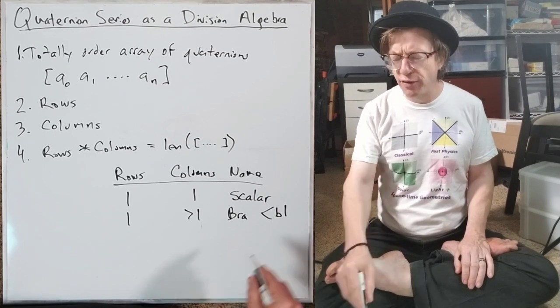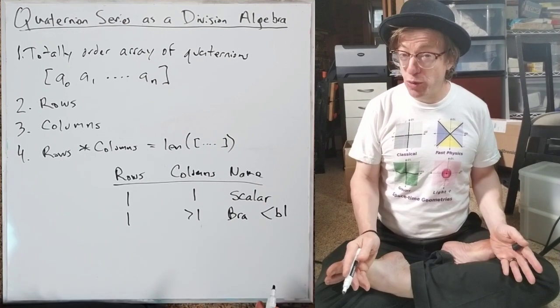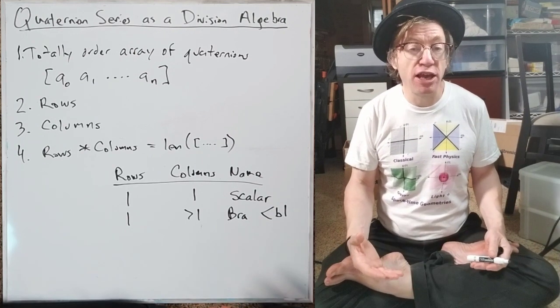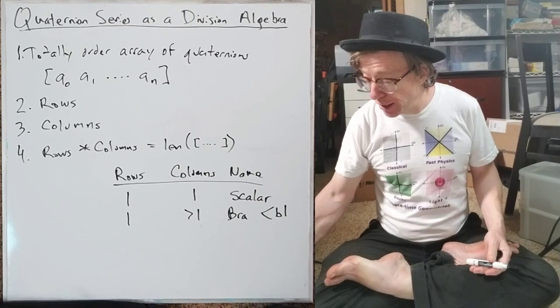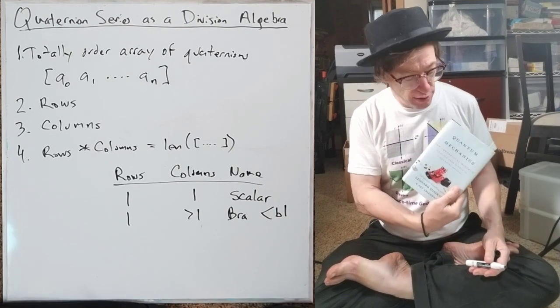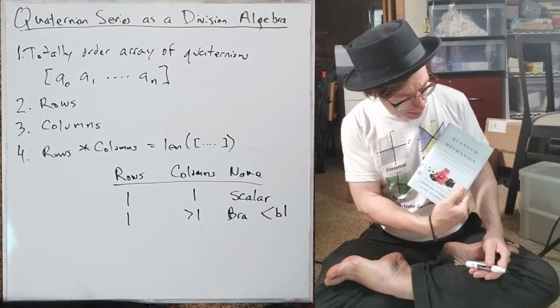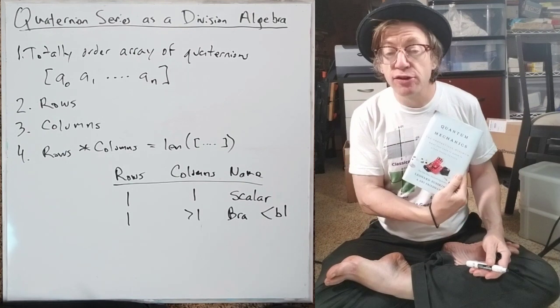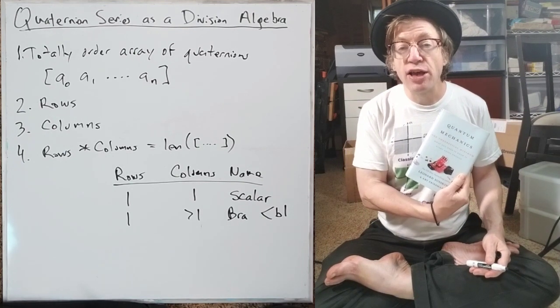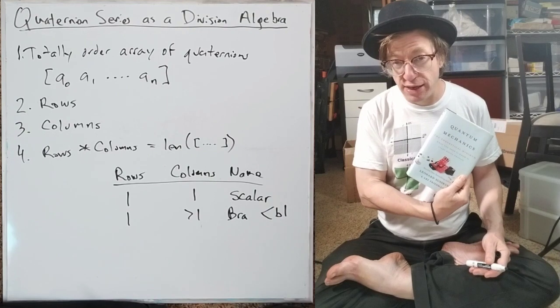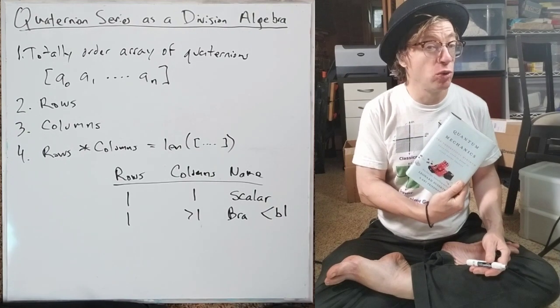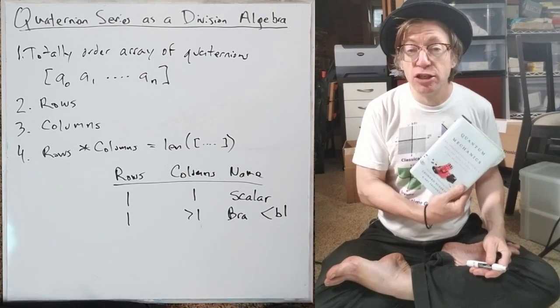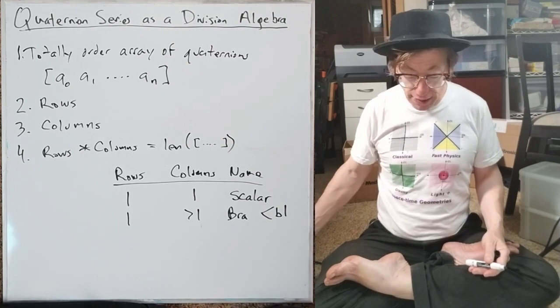And you say, hmm, where have I seen that kind of symbol before? Probably quantum mechanics. And the whole reason for my investigation into Quaternion series is this book, Quantum Mechanics, The Theoretical Minimum, What You Need to Know to Start Doing Physics, by Susskind and Friedman. Because I'm going through the process of taking every math statement in this book and translating it into Quaternion series. And I've gotten through three out of ten chapters, so that's progress.